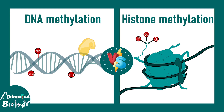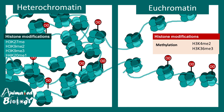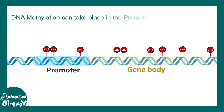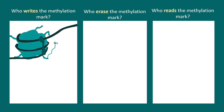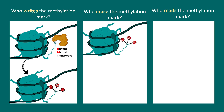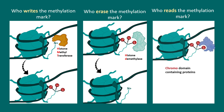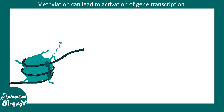Just like DNA methylation, histone methylation can be present at the euchromatin or heterochromatin region, and the types of modifications in these regions are very different. Regarding writers, erasers, and readers: histone methyltransferases are the writers, histone demethylases are the erasers, and proteins which contain a chromodomain can read the methylation mark and interpret its inherent message.